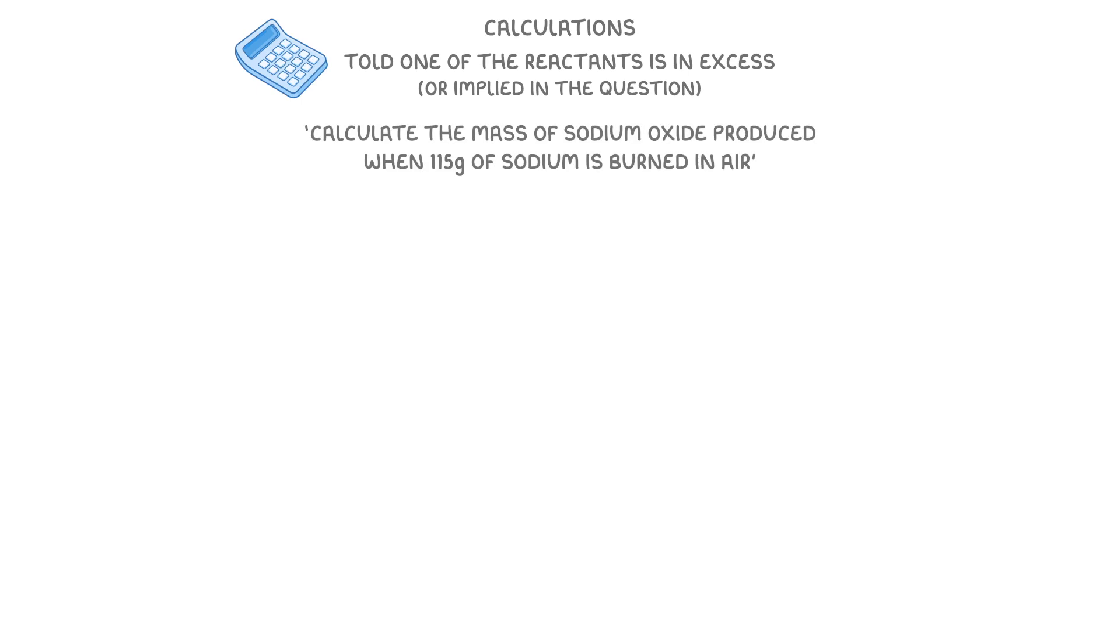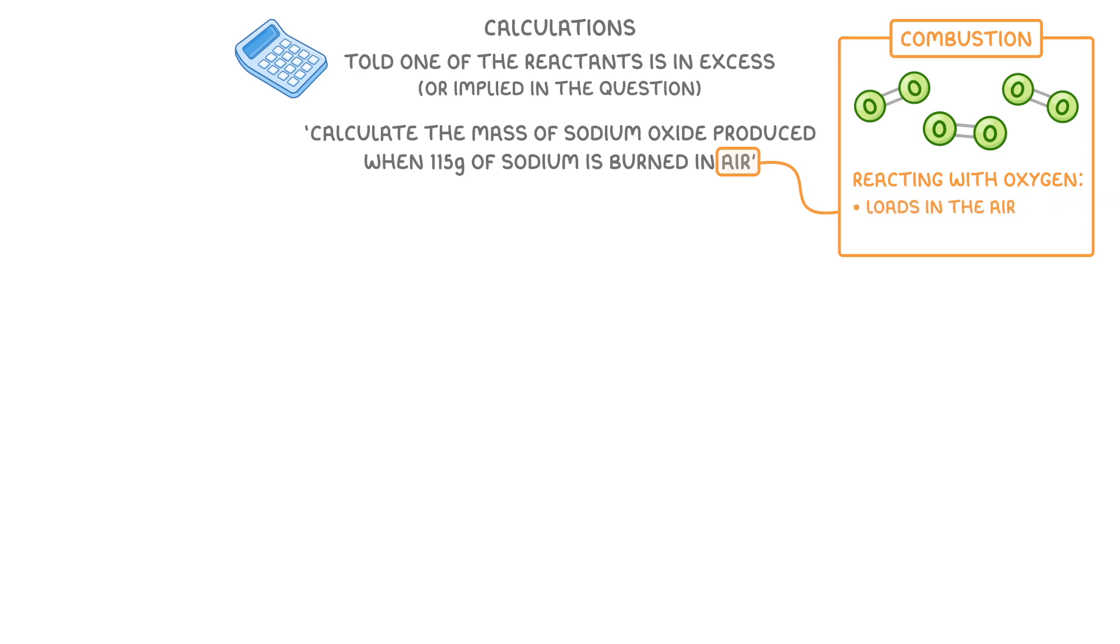Now when it comes to calculations, you'll sometimes be told that one of the reactants is in excess. In other cases though, it might just be implied in the question. For example, calculate the mass of sodium oxide produced when 115 grams of sodium is burned in air. Burning in air is known as combustion, and basically just means reacting with oxygen. And if you think about it, there's loads of oxygen floating around in the air, so we can assume that the oxygen will be the one in excess. Which means that our sodium must be the limiting reactant.